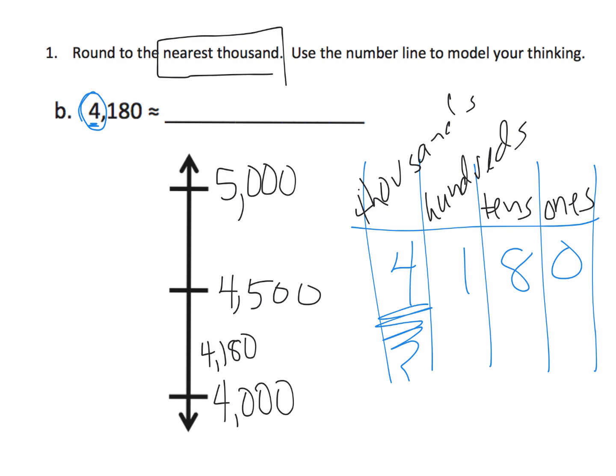So 4,180 lives there, and so that means it rounds down to 4,000 compared to 5,000. It's closer to 4,000 than it is to 5,000, so the proper, in this case, rounding is 4,000.